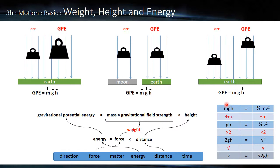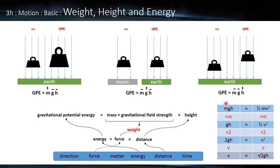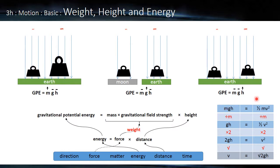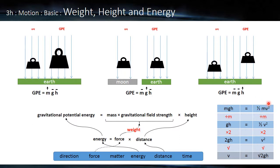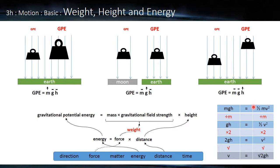When we have an interchange between gravitational potential and we let something drop, we get kinetic energy. So that's the formula for kinetic energy. So if we know the GPE, we can work out the KE at the bottom. If we do a bit of rearranging, we cancel out the M's. We divide both sides by M.